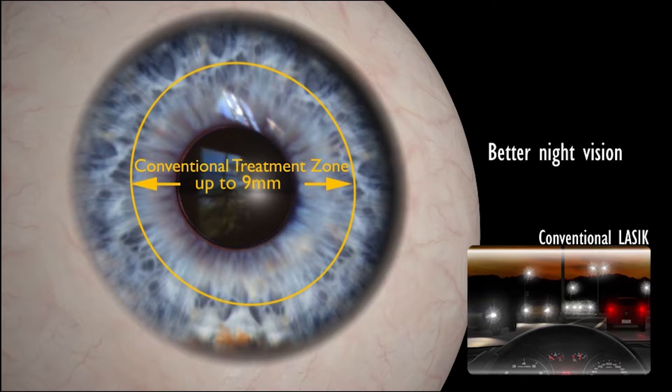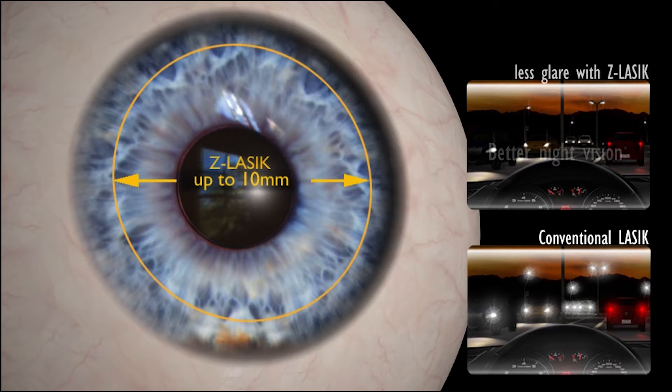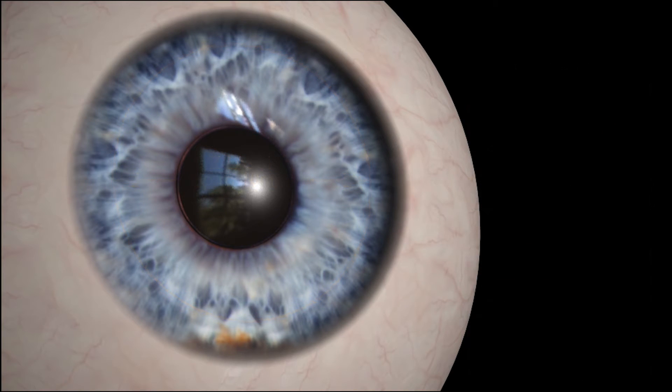With Z LASIK, your surgeon can apply the vision correction to a larger area on the cornea. Consequently, the quality of vision, particularly at night, in poor lighting or reduced contrast conditions, is markedly improved.